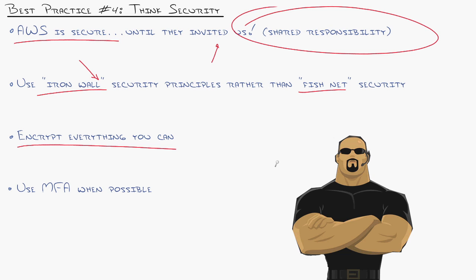Encrypt everything that you can. They make it very easy with AWS. Same thing with multi-factor authentication. Usually a big hassle for an IT person to implement that. It's a click of a button. So use it wherever you can in AWS.